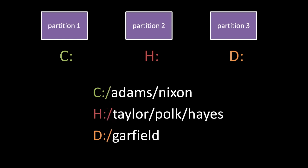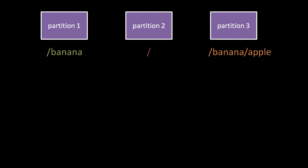The other major difference in Unix is that partitions are not assigned drive letters. Instead, one partition is mounted at root, meaning that the path slash refers to the root directory on that partition. Each additional partition is then made accessible by mounting it to some directory on some other already mounted partition.